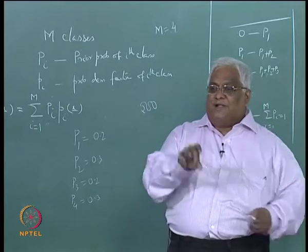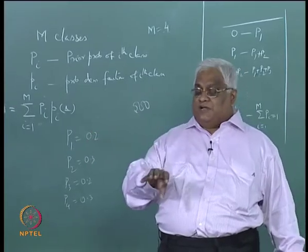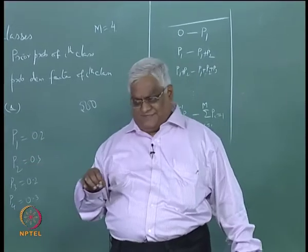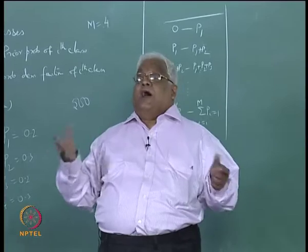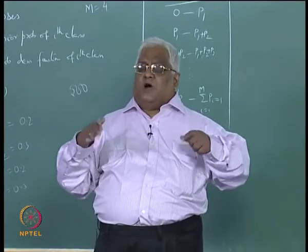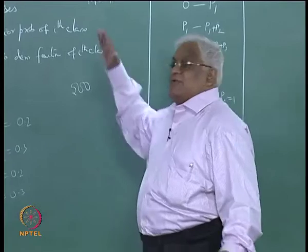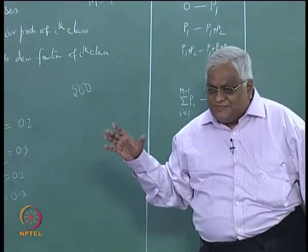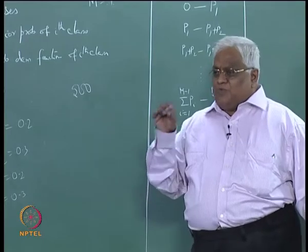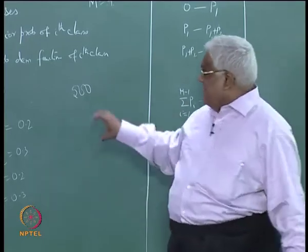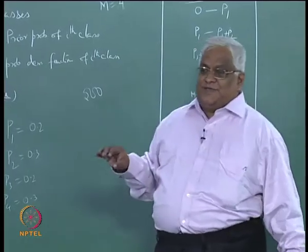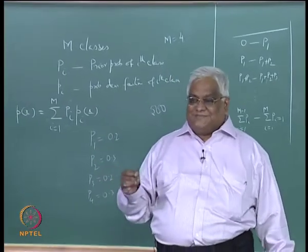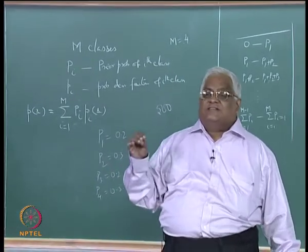If you have 100 points from class 1, 150 from class 2, 100 from class 3, and 150 from class 4, and we say they are IID, then what we want to have happened is that sampling process. But has it really happened? Unfortunately the answer is no.